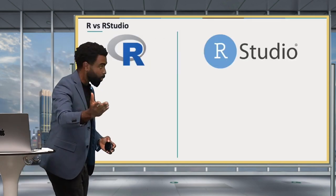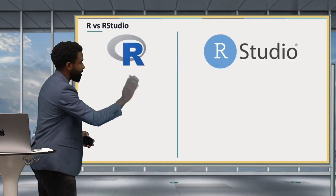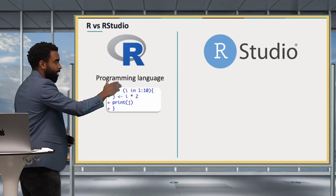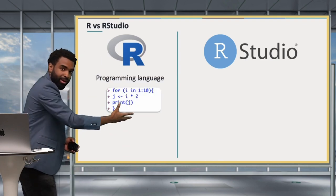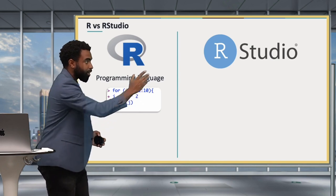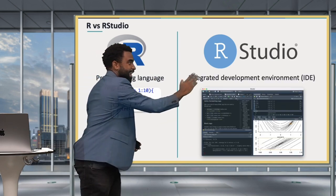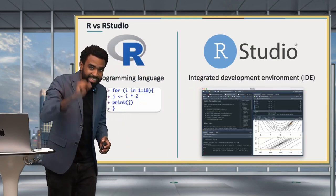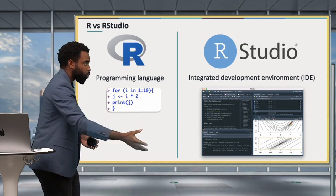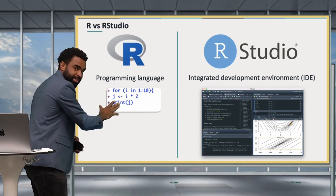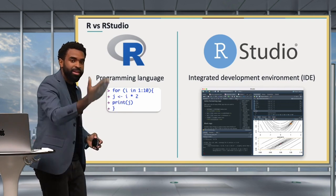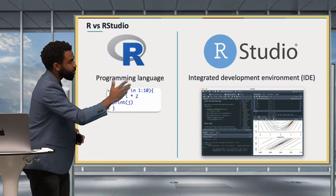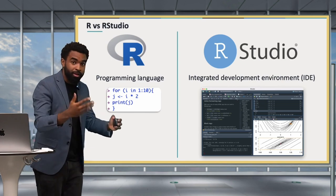The first distinction we want to make is between R and RStudio. R is a programming language you're going to use to write code. RStudio is an integrated development environment, or IDE, that makes working with R easier. There are many other IDEs you could use to work with R, but RStudio is by far the best.